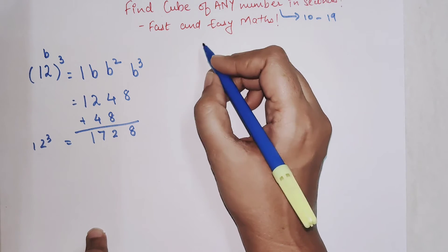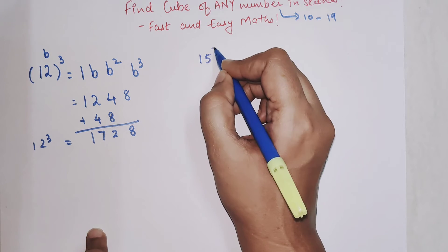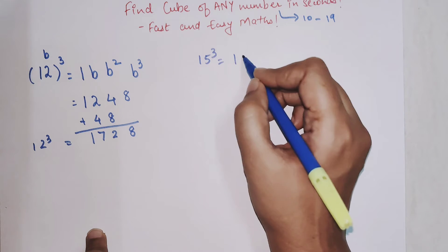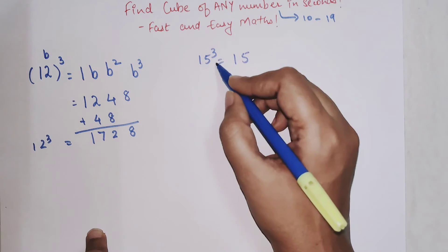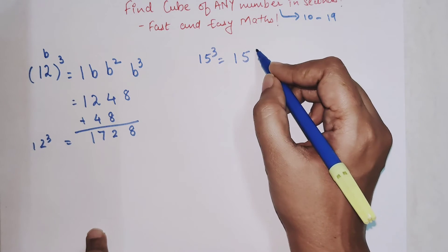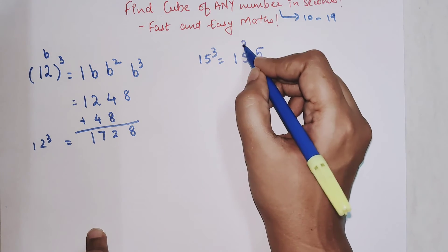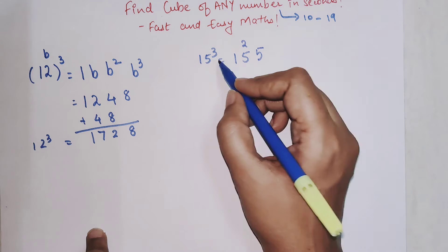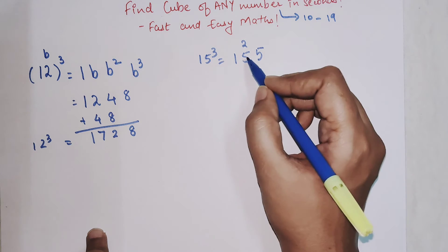So again one, then we write five as it is. Five square will be 25, so five will be written as it is, two will get carried, and five cube will be written as 125.